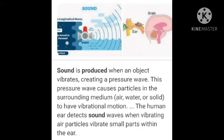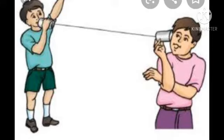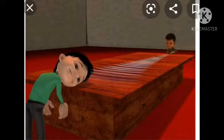The question arises: how is sound produced? Sound is produced when an object vibrates, creating a pressure wave. This pressure wave causes particles in the surrounding medium — like air, water, or solid — to have vibrational motion. The human ear detects sound waves when vibrating air particles vibrate small parts within the ear. That is how we listen to sound when it creates a wave-like motion.